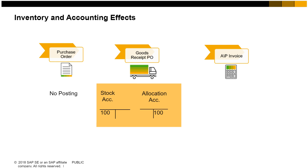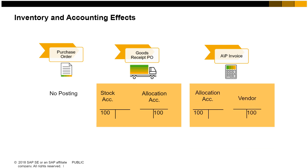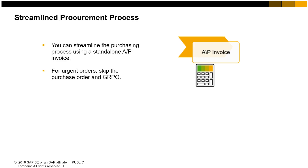Later, when the AP invoice is posted, the goods receipt PO is closed. At that point, the AP invoice creates a journal entry that posts the invoiced amount to the debit side of the allocation costs account and to the credit side of the vendor account. In this way, the amount in the allocation cost account from the goods receipt PO is cleared, and the system records the amount owed to the vendor.